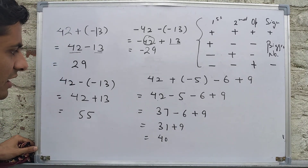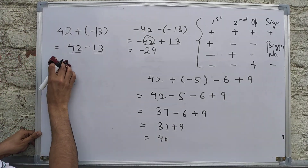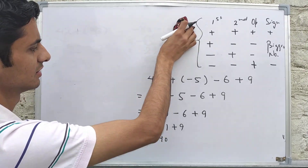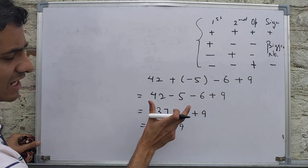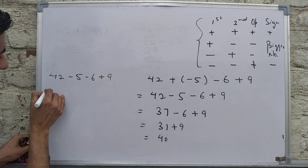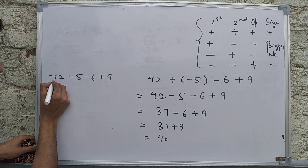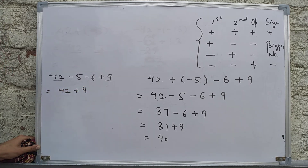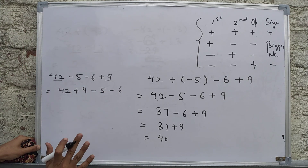There is another way to solve this. From 42 - 5 - 6 + 9, we can combine numbers with the same sign. Since addition is commutative, rearrange as (42 + 9) + (-5 - 6).